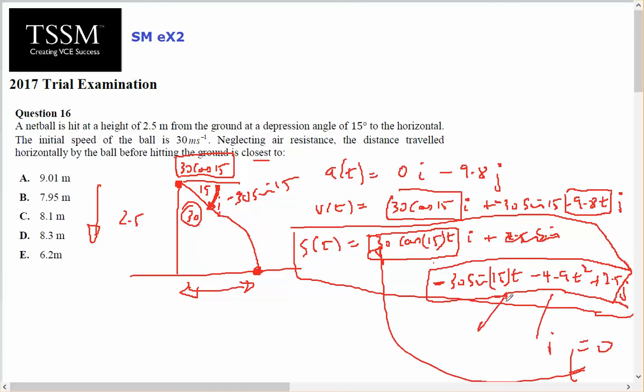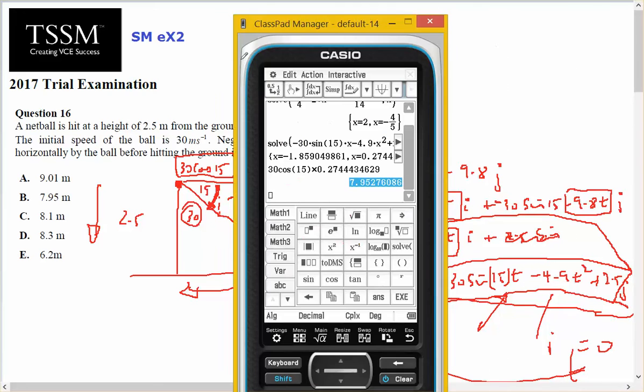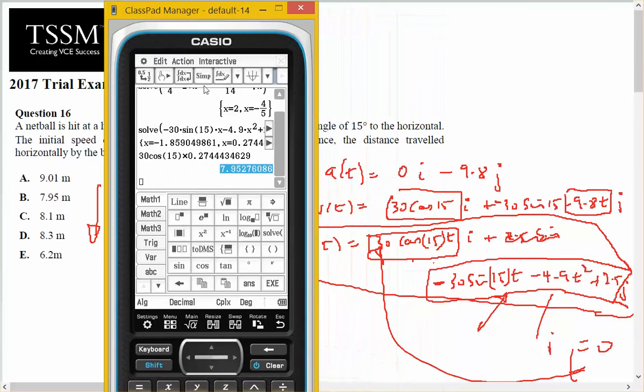So I'm going to make that equal to zero, find out t, sub it in there. I've already done that. Here's my expression for the j component.